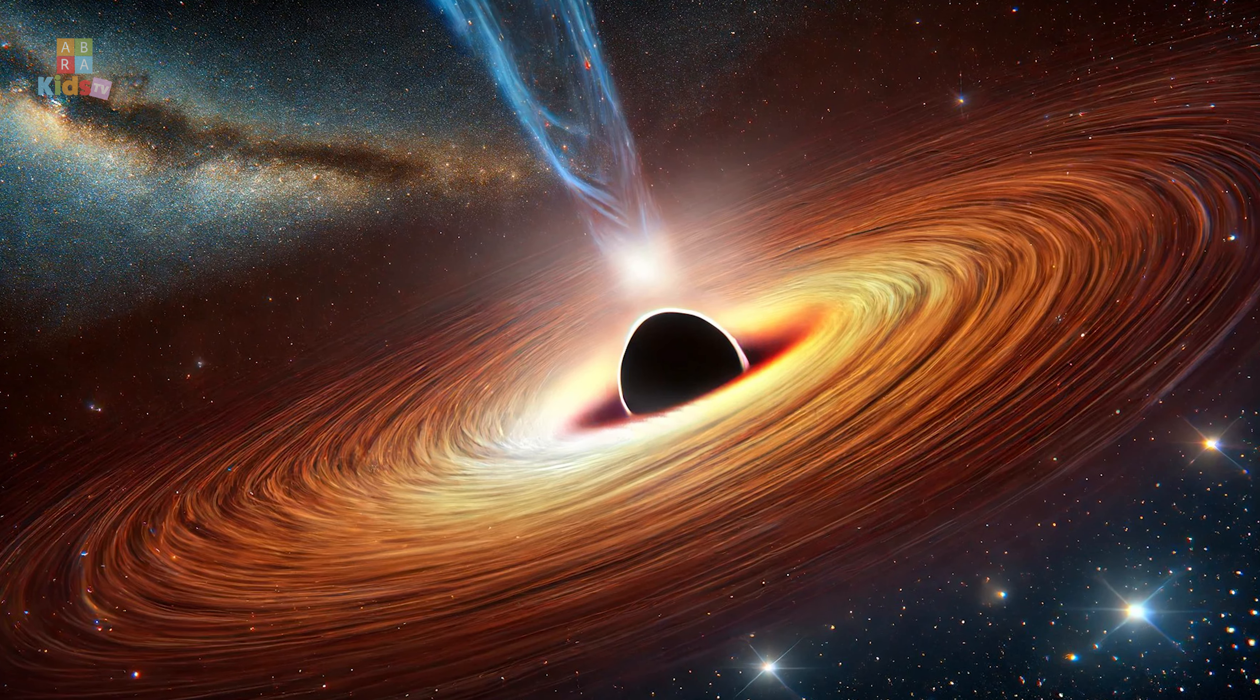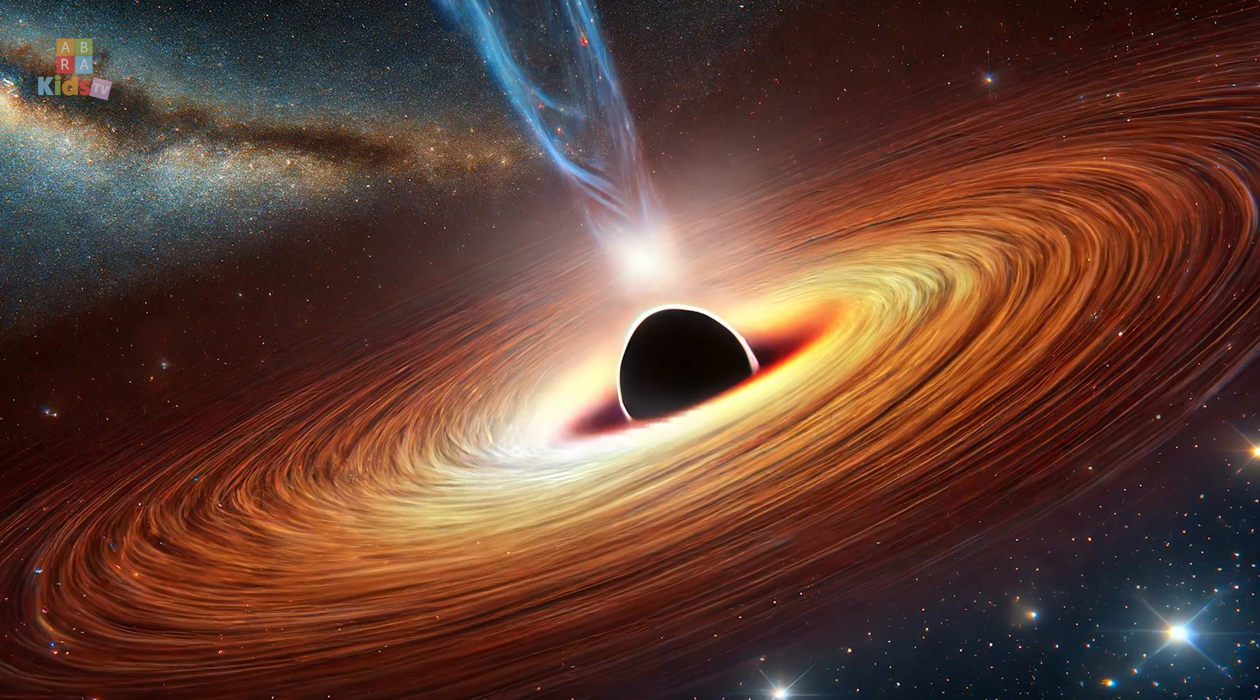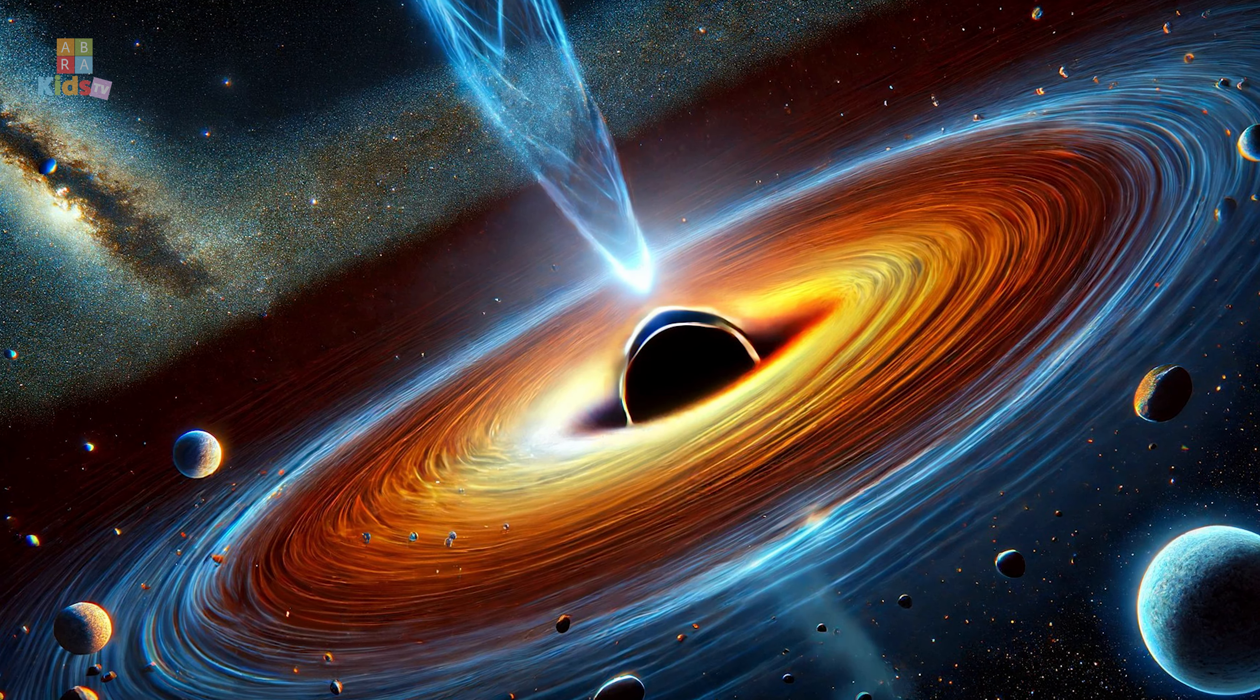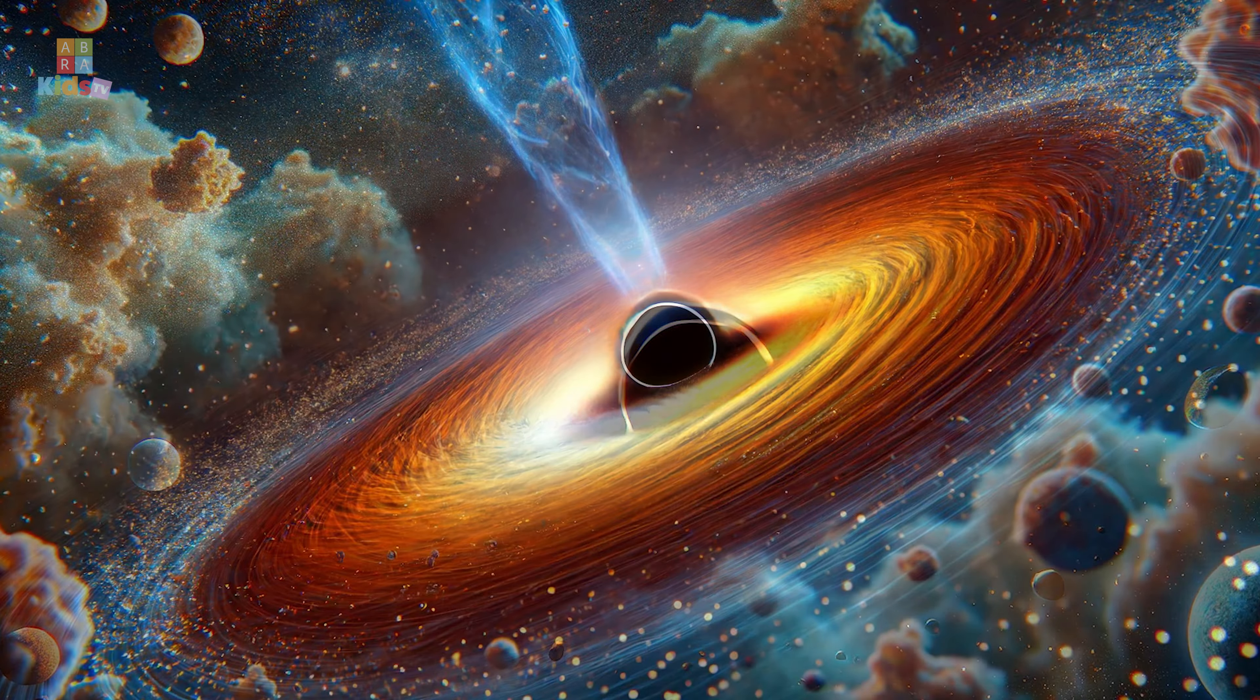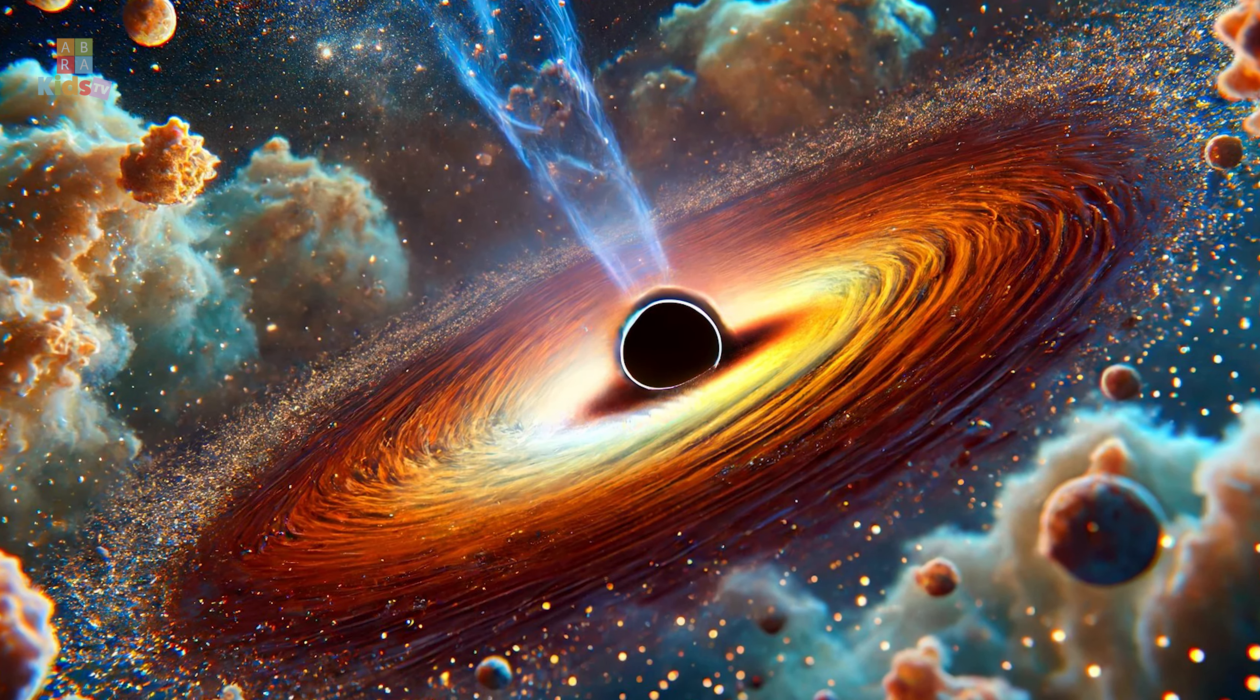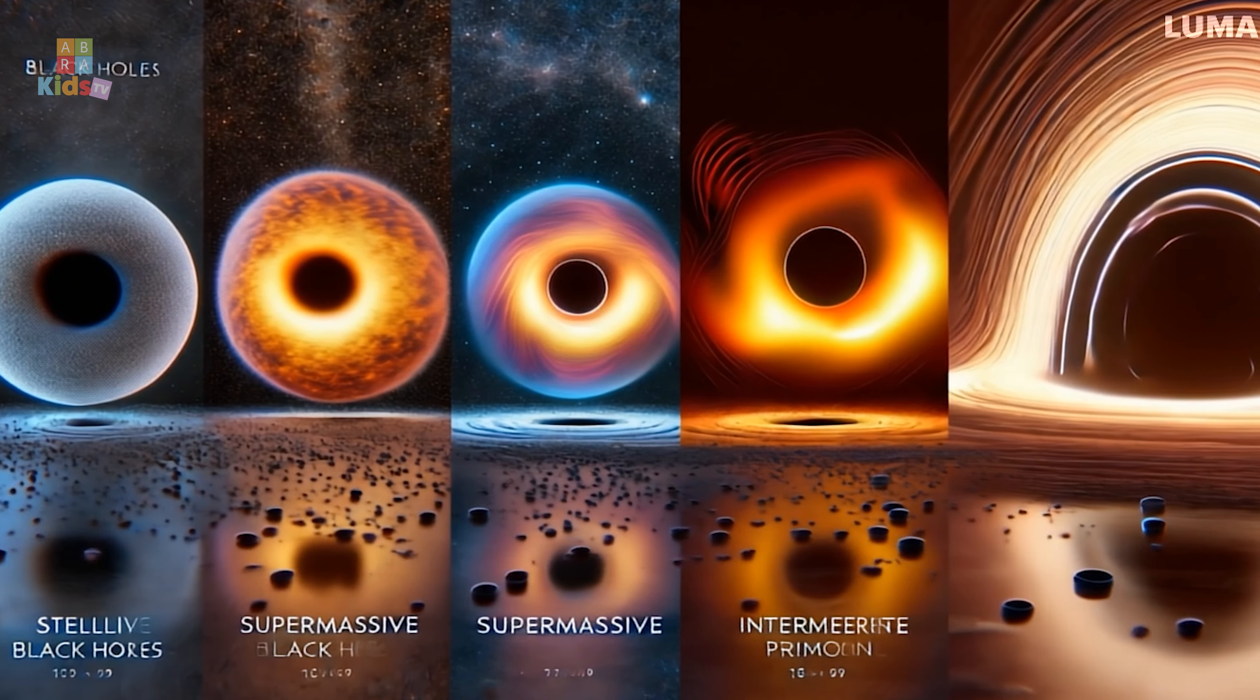Supermassive black holes, found in the centers of galaxies, can be millions or even billions of times more massive than the sun. There are also intermediate black holes, which fall between these two extremes, and primordial black holes, hypothesized to have formed soon after the Big Bang. Each type of black hole has unique properties and plays different roles in the cosmos.